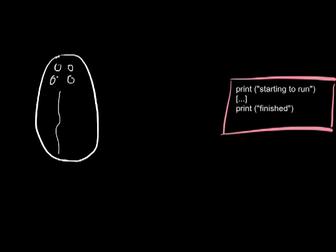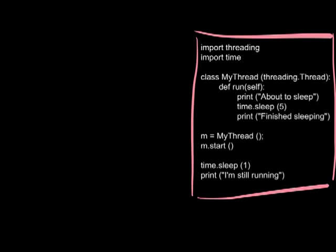Here's an example of a multi-threaded program. What I've created is a class that defines a single method called run, which acts as an entry point into our thread. When we create and start this thread, it will come in, print out 'about to sleep', wait for five seconds, and then print out 'finished sleeping'.